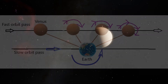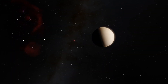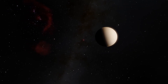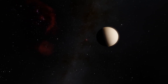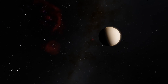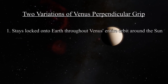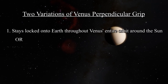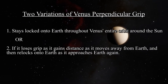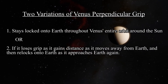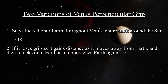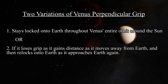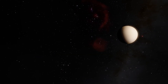There are two variations of Venus's perpendicular grip. It is not clear if the gravitational perpendicular axis lock onto Earth stays locked onto Earth throughout Venus's entire orbit around the sun, or if it loses the grip as it gains distance moving away from Earth, and then re-locks onto Earth as it approaches Earth again. That is left to be discovered.